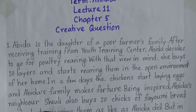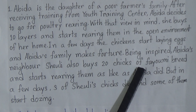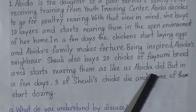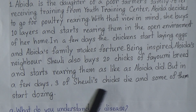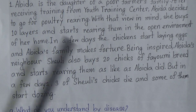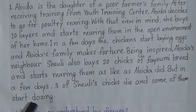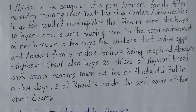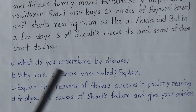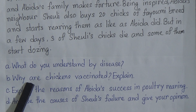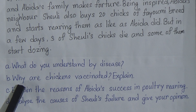Being inspired, Abhida's neighbor Shuli also buys 20 chicks of Filmy breed and starts rearing them as Abhida did. But in a few days, three of Shuli's chicks die and some of them start dozing. This is the stem. By using the stem, we will answer question numbers C and D. For question number A, you can get the answer from your book, and for question number B, you need to understand the text properly.